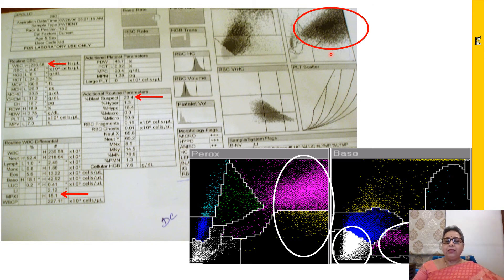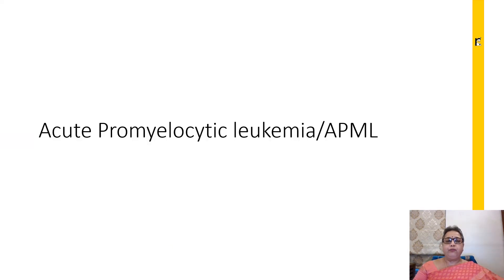One look at this will tell you that this is APML, and of course you can confirm it with the peripheral smear. This is a characteristic scatter plot that one needs to know in order to diagnose acute promyelocytic leukemia.